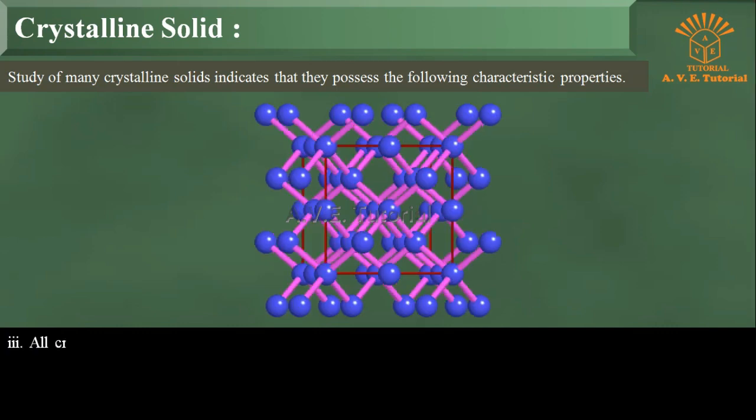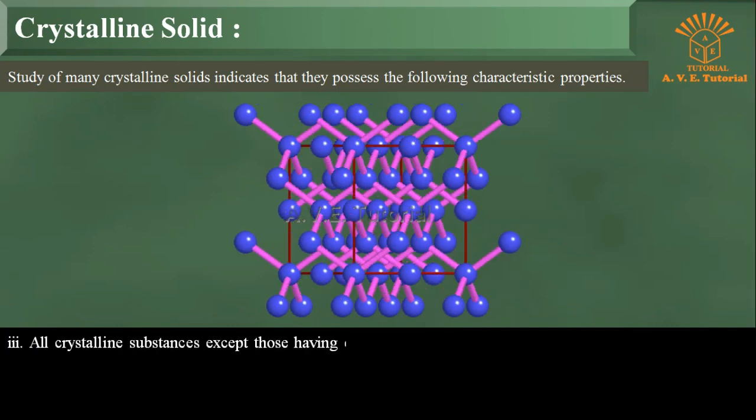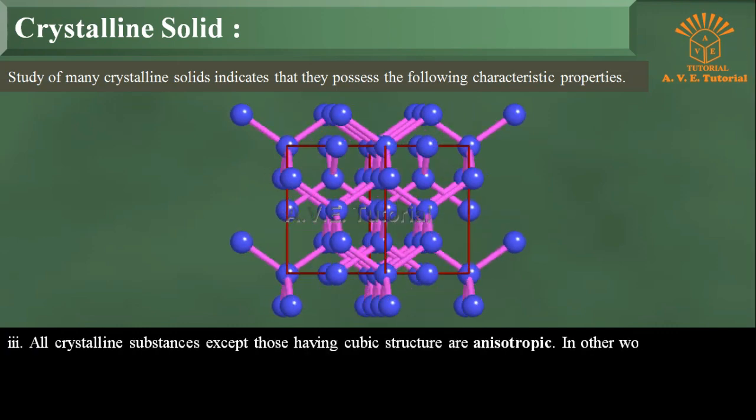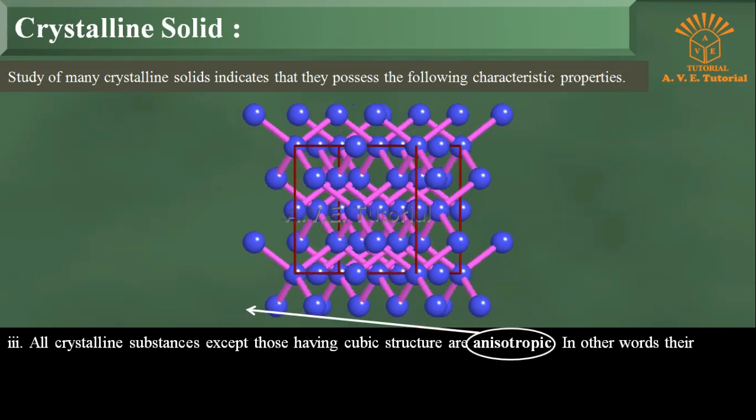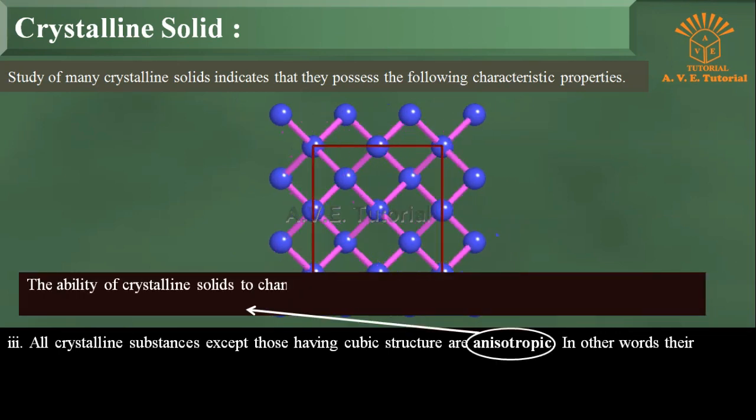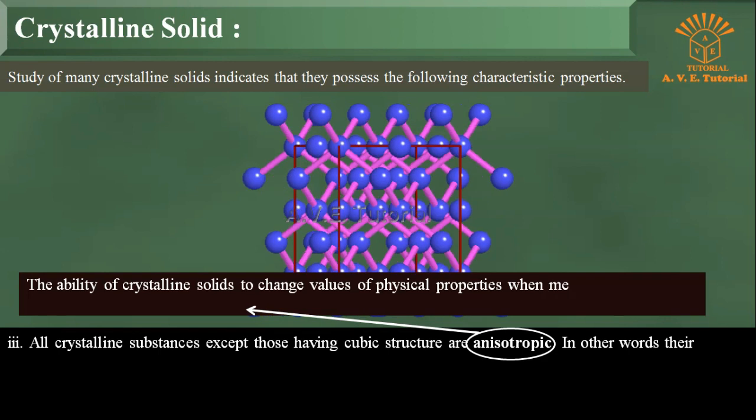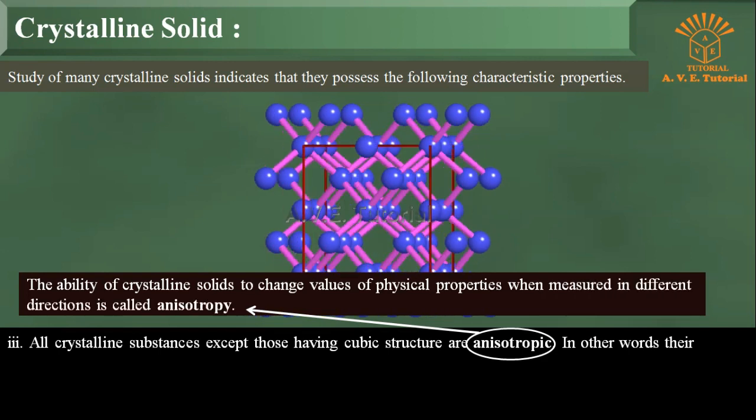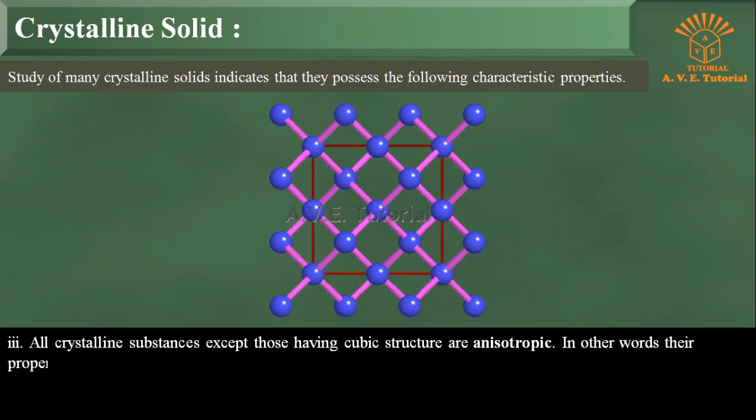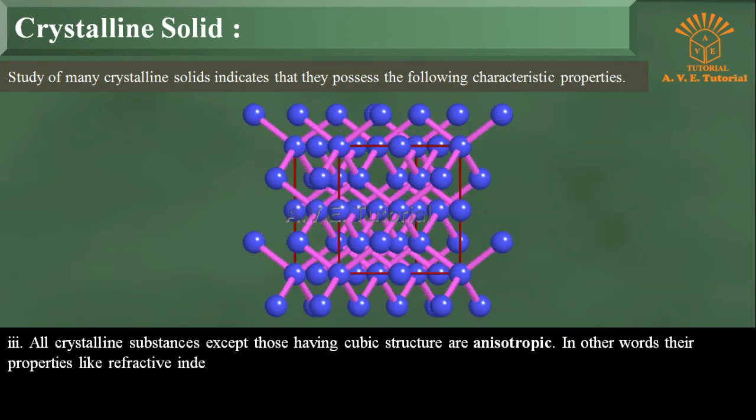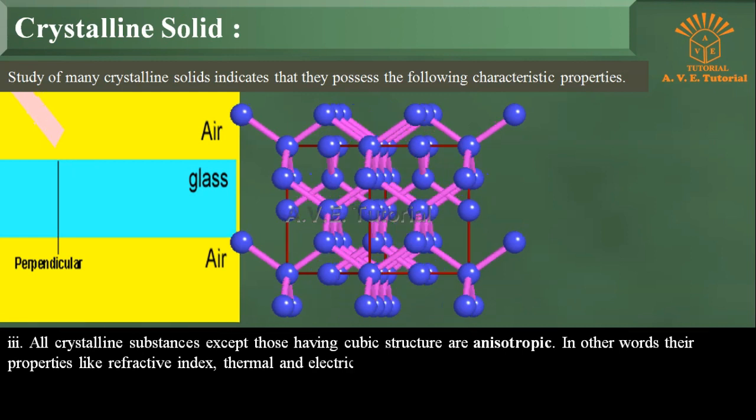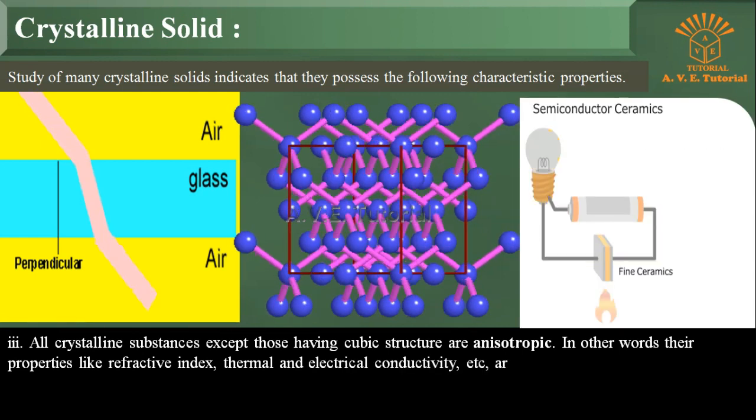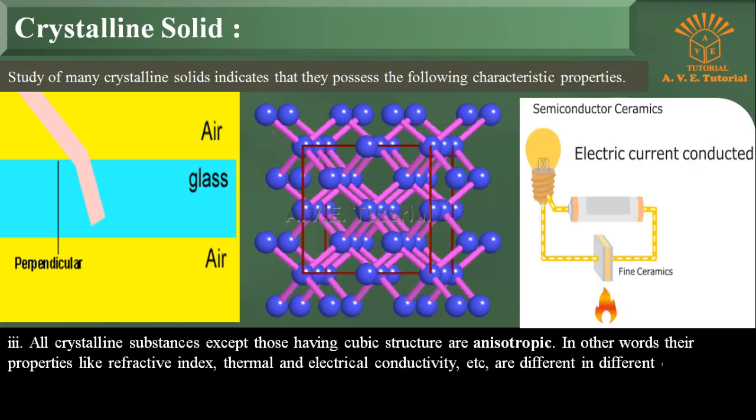Three: All crystalline substances except those having cubic structure are anisotropic. The ability of crystalline solids to change values of physical properties when measured in different directions is called anisotropy. In other words, their properties like refractive index, thermal and electrical conductivity, etc., are different in different directions.